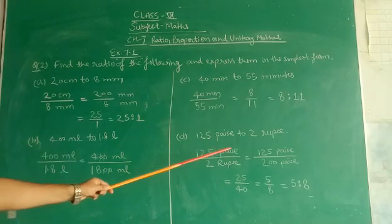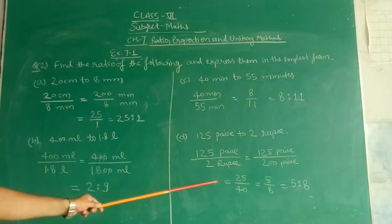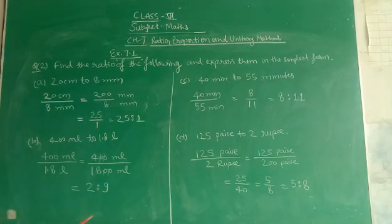So we write it as 125 upon 200 paise, divide by 5, that is 25 upon 40, again divide by 5, that is 5 by 8. It is written as 5 ratio 8.